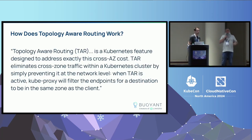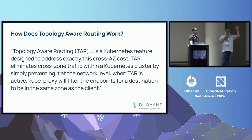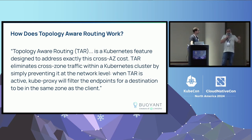How does topology-aware routing work? It's a Kubernetes feature designed to address the cross-AZ problem — at the network level through kube-proxy, it hardwires those connections and says, these are the endpoints you're going to use — your client is in this zone, these are your endpoints. Linkerd's destination controller respects that. When we are choosing endpoints, we defer to topology-aware routing as long as it's enabled.